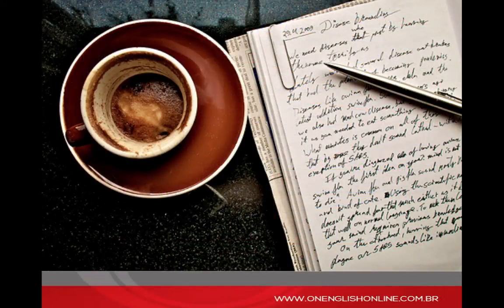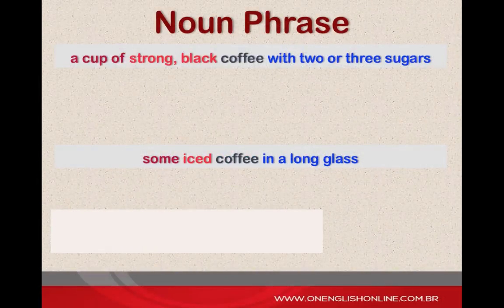Very well. Shall we move on and zoom in on the quality of your descriptions? For example, how do you like your coffee? A noun phrase is a combination of words that includes a noun — a person, a place, or a thing — and the modifiers that distinguish it.